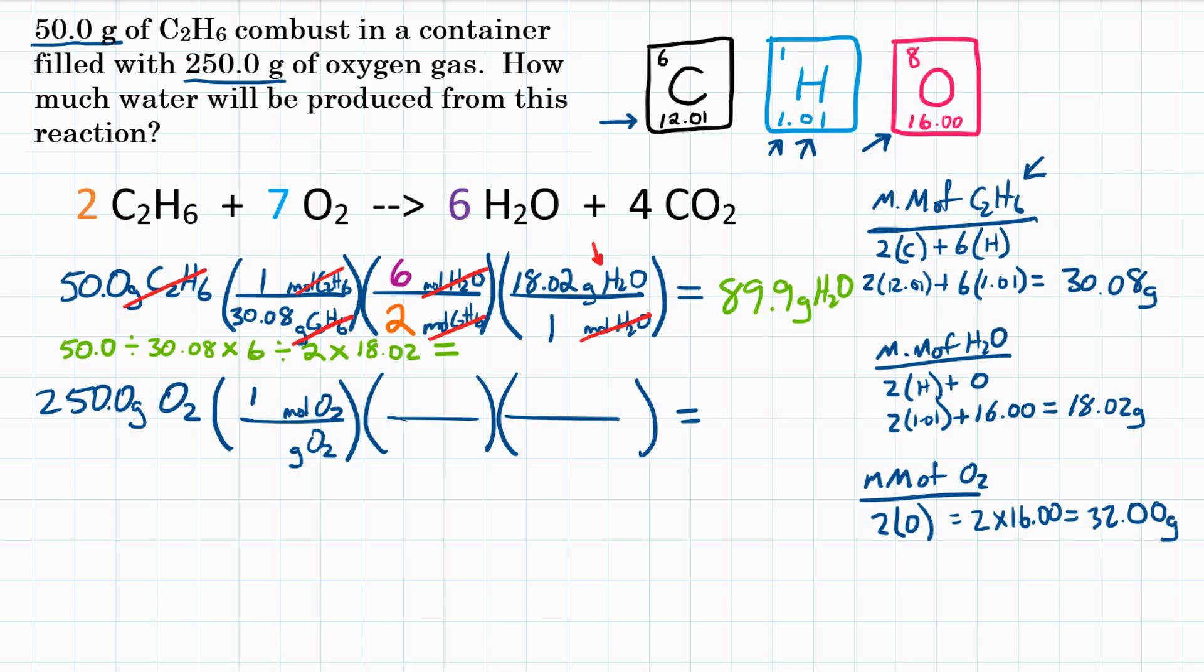So 2 times 16.00 equals 32.00 grams. That is the molar mass of O2. So that goes on the bottom, 32.00 of our first conversion factor, and that successfully will get rid of grams of O2.